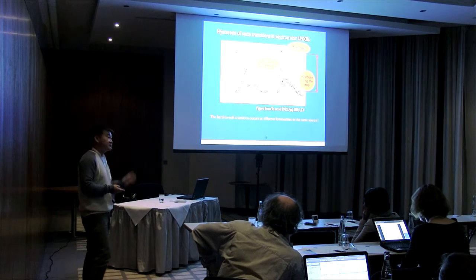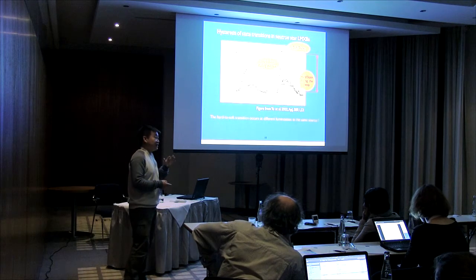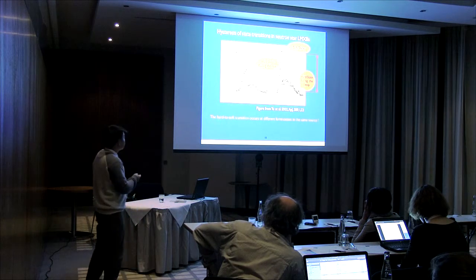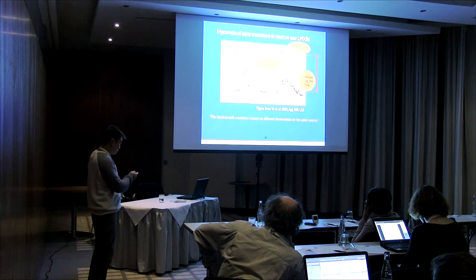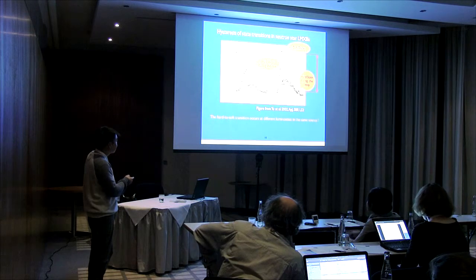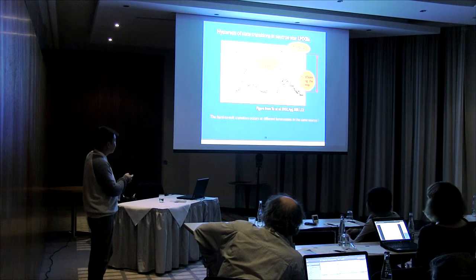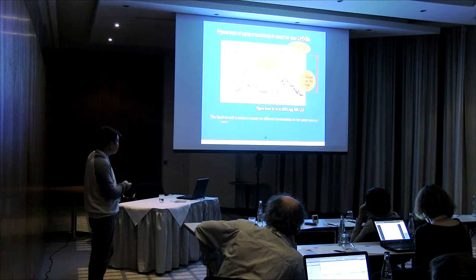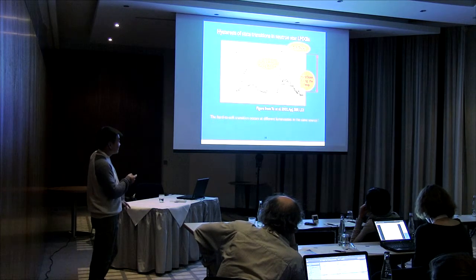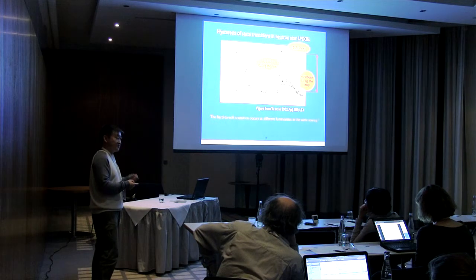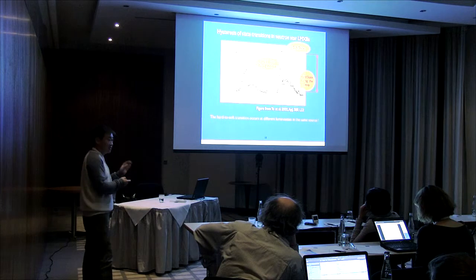Moving on to the next topic: why do black hole transients trace different loops? Looking at two X-ray outbursts in Aquila X-1, a neutron star transient, with two different amplitudes, we found that the hard X-ray flux shows that the source reaches different brightness in the hard state during different outbursts. The hard-to-soft transition actually occurs at different luminosities in the same source. There are no uncertainties in the measurement of the compact object mass, distance, or orbital period, so the difference can only come from the accretion.